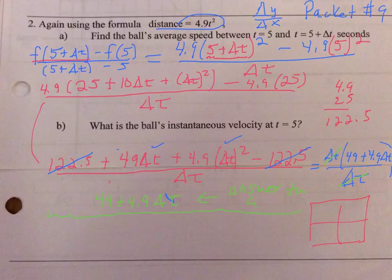For b, what's the instantaneous velocity at delta t? That means you're going to need to take a limit as delta t approaches zero. You're going to take the limit of what you just found, the 49 plus 4.9 delta t. When delta t approaches zero, this term will go to zero.